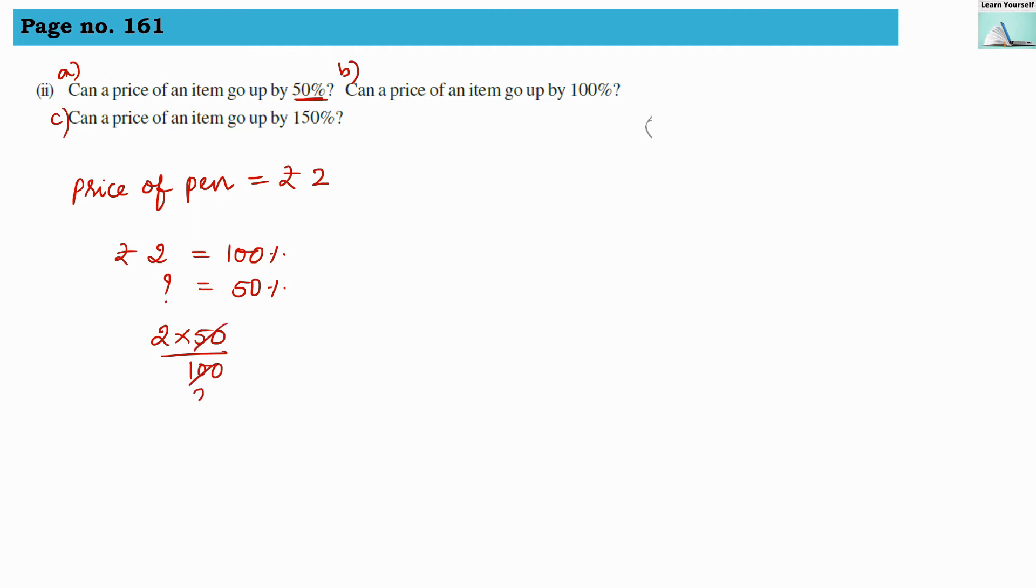So 50 and 100, and 2s will get cancelled out. We will get here 1 rupee. So when price will hike by 1 rupee, that means it is 50% hike. So when price will be 3 rupees, then it is 50% hike. So yes, for question A, price can be 3 rupees. Then yes, item price can go up by 50%.